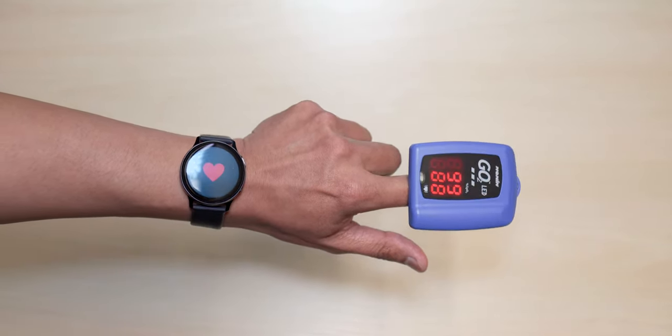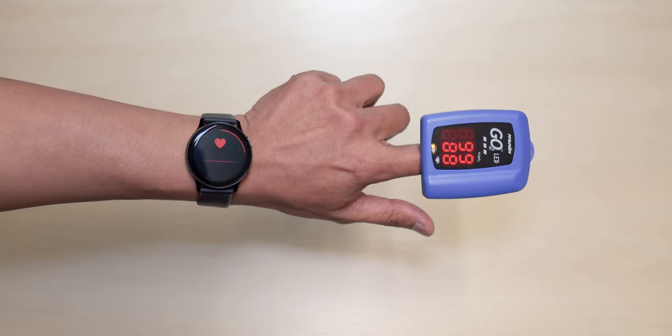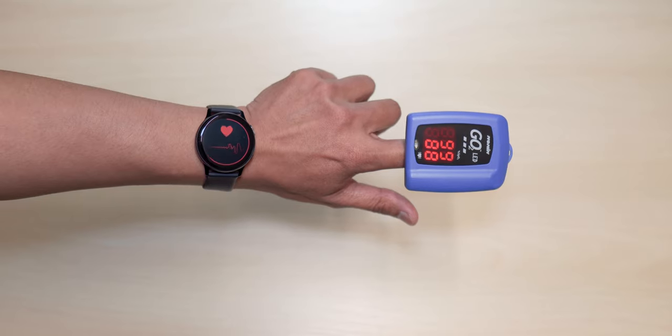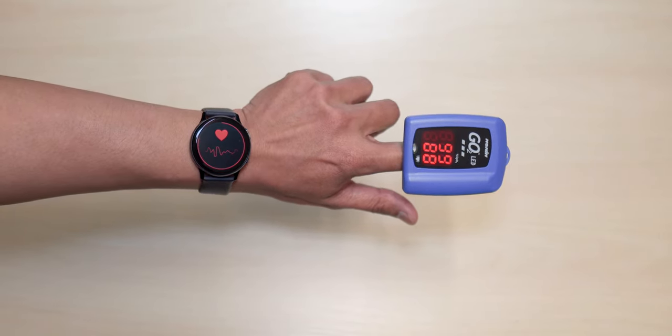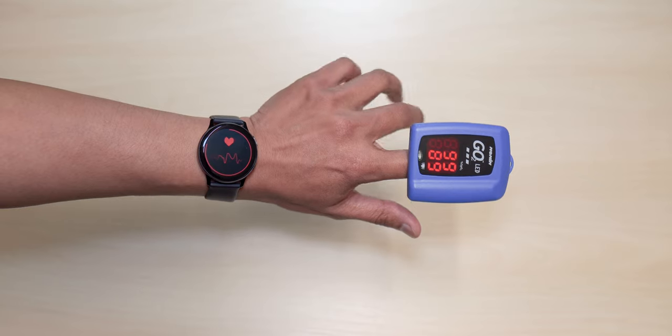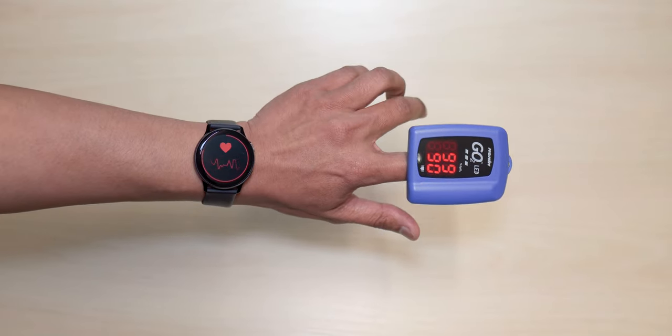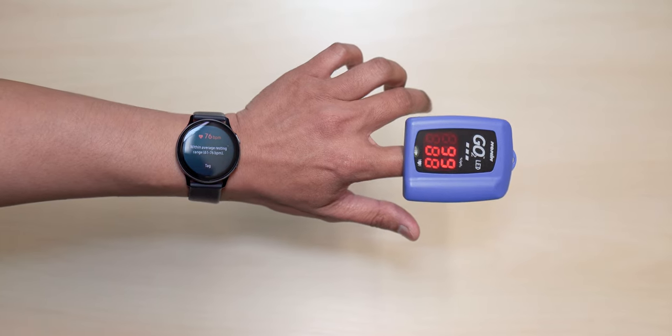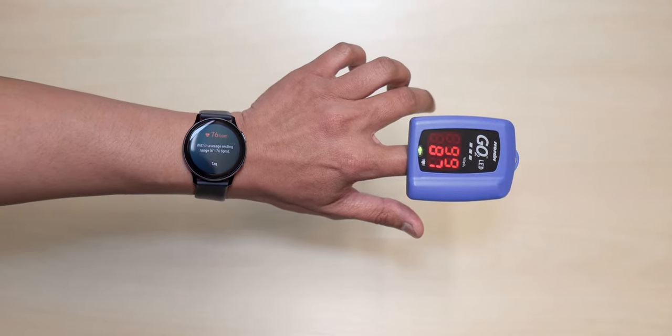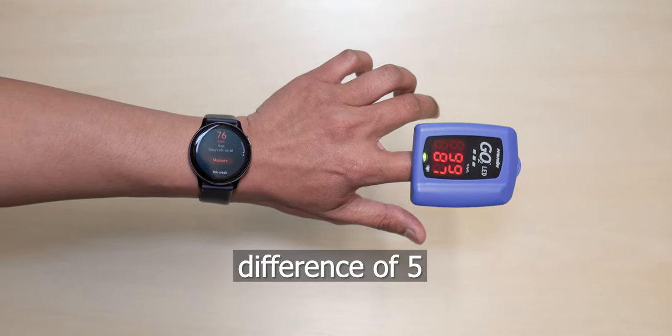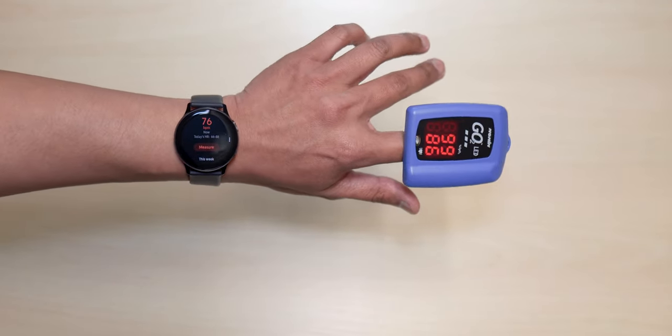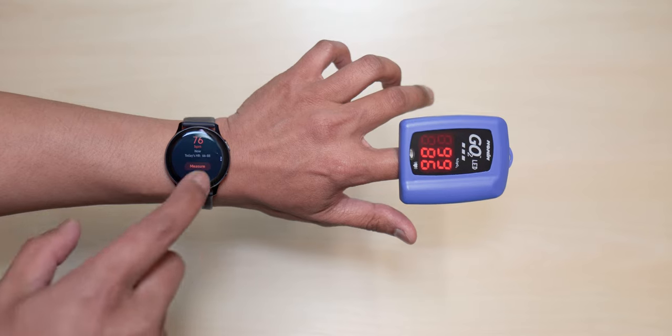Measure, measure. I will continue to talk so that both devices will pick up that my heart is working extra hard. We are at 91 on the oximeter and on the watch we are at 76. That is way off right there guys, way off. Let's do another one.